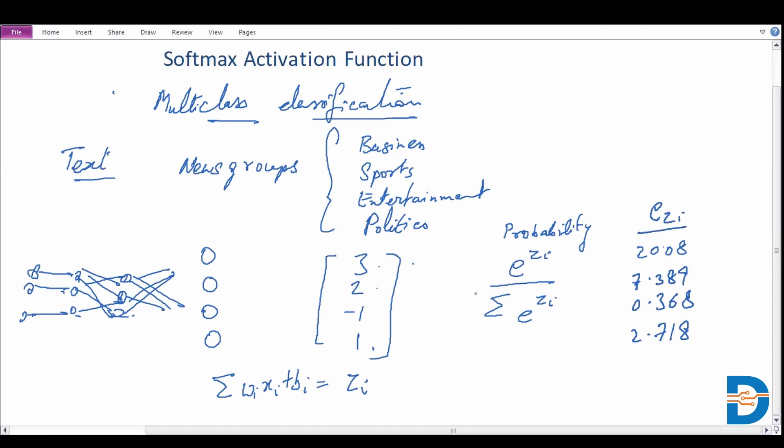Computing this ratio for each of our classes, we're getting about 0.658 for the first one, 0.240, 0.01, and 0.09.